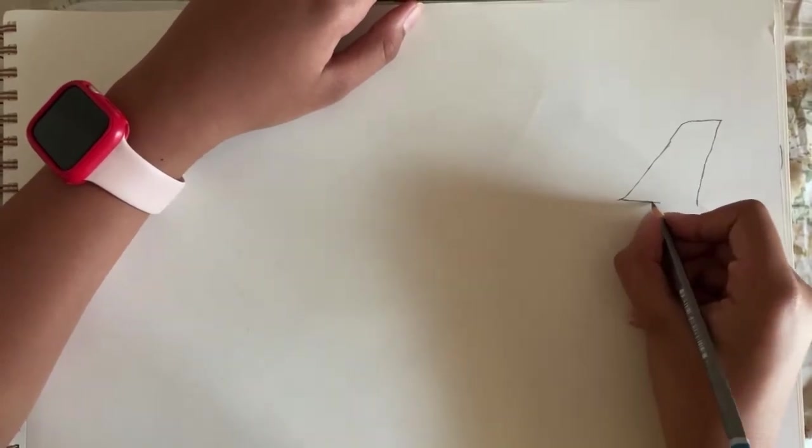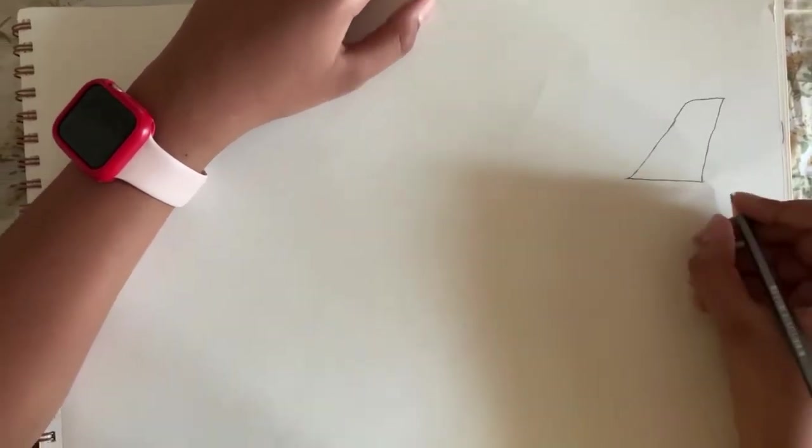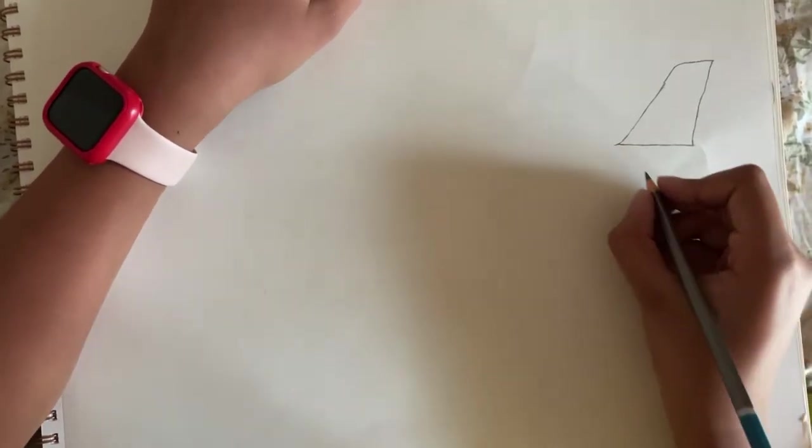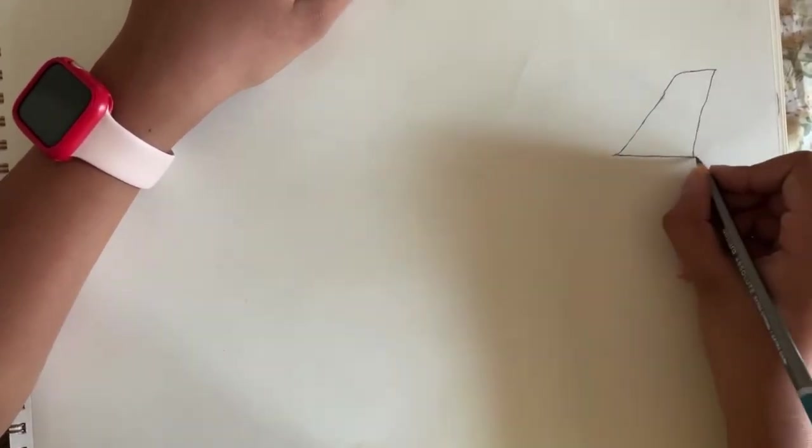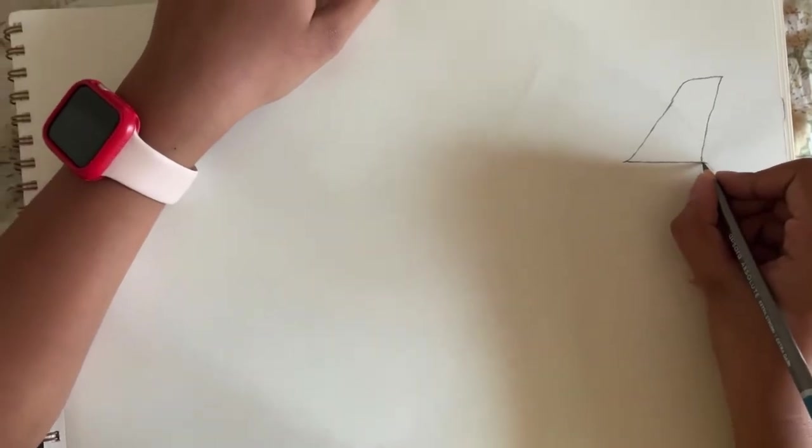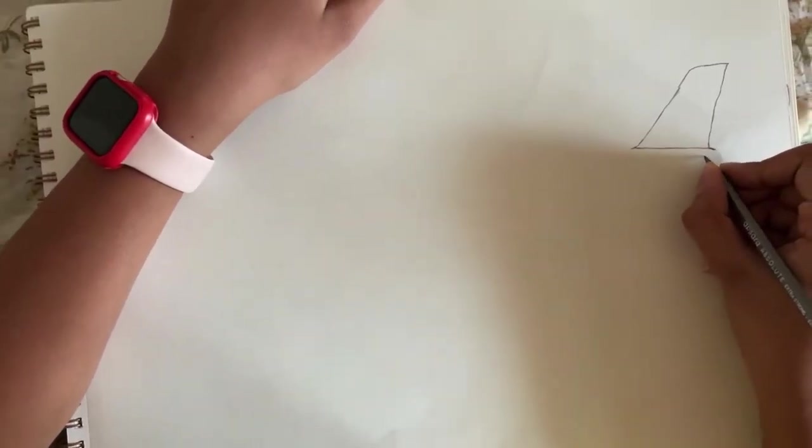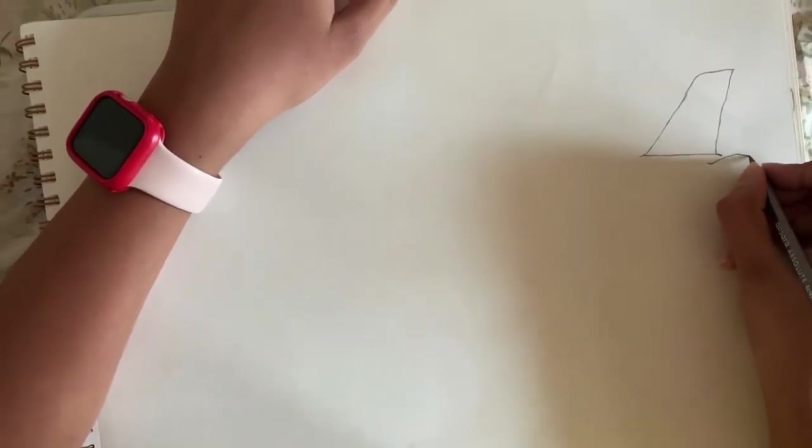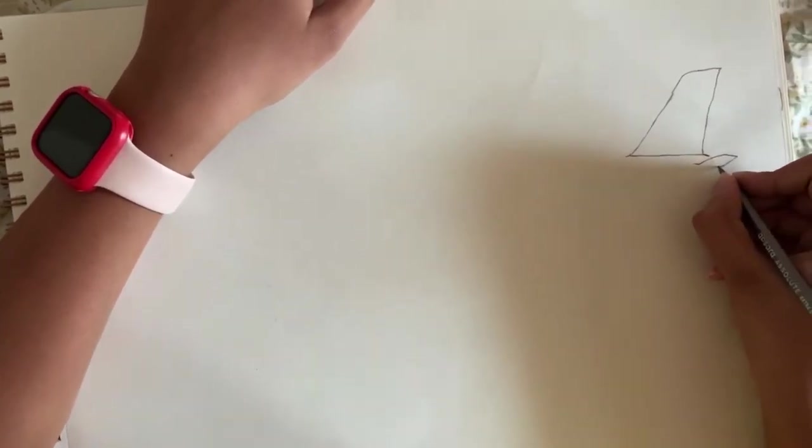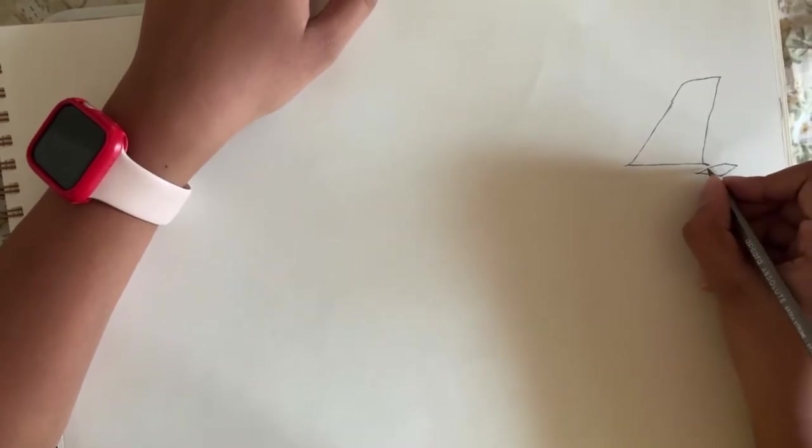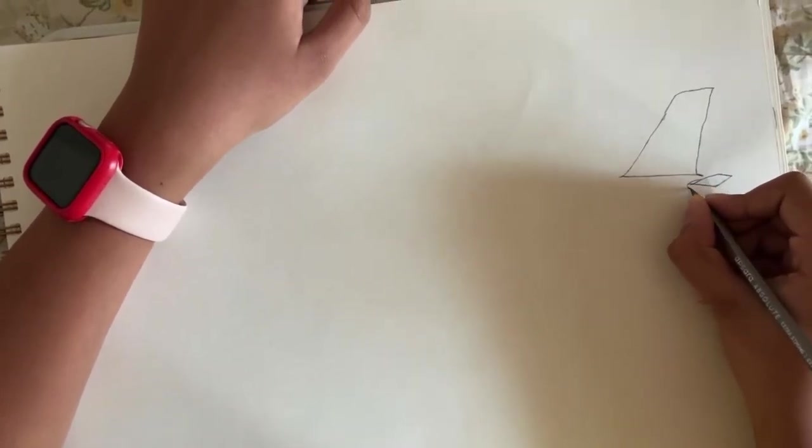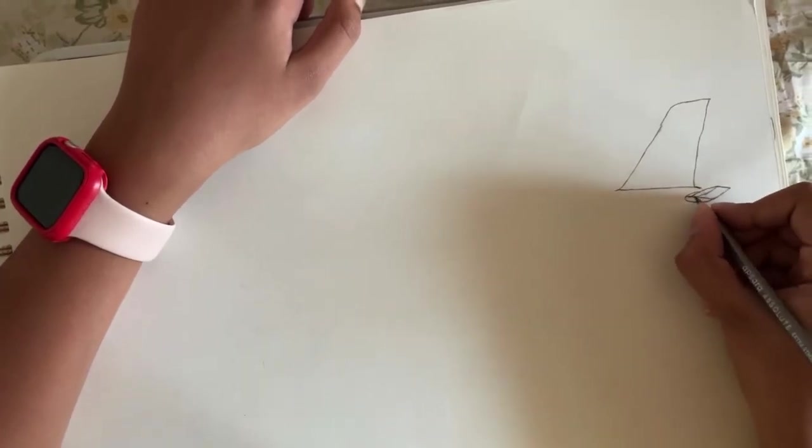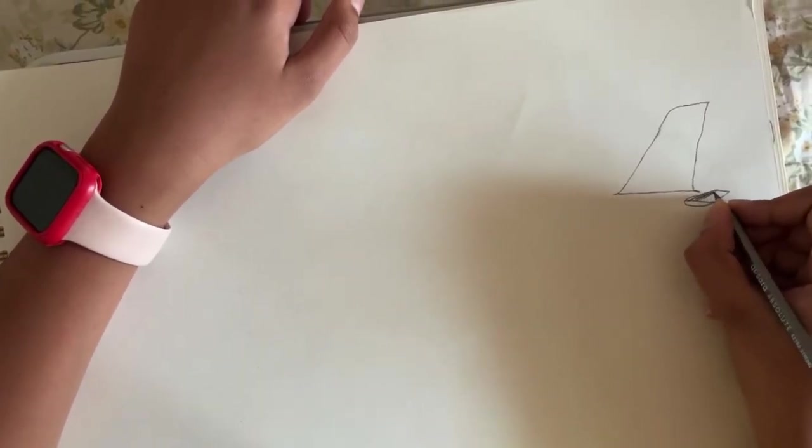Just draw a line. Now you continue, first let's go over here. We'll draw the stabilizers. Shade it.